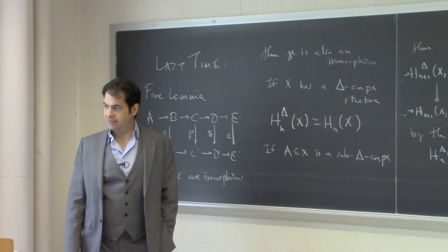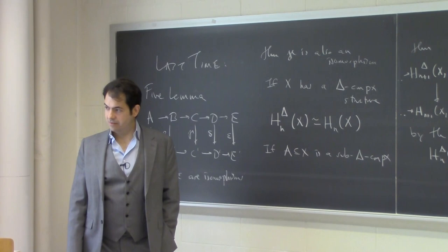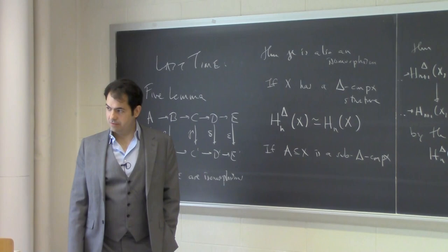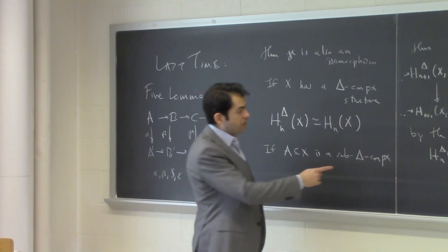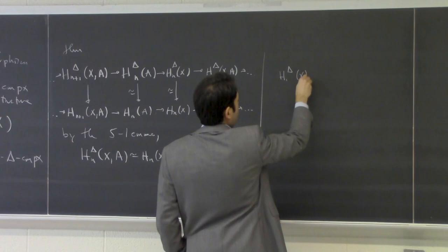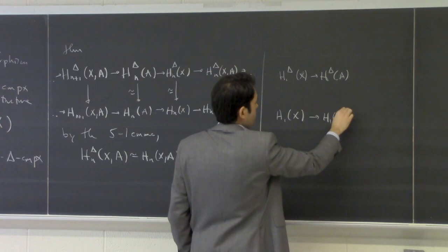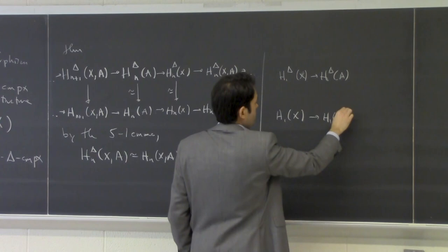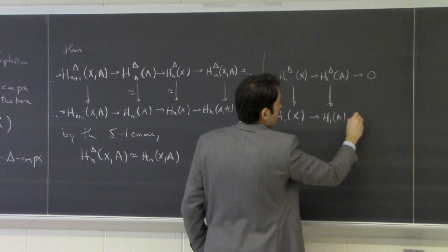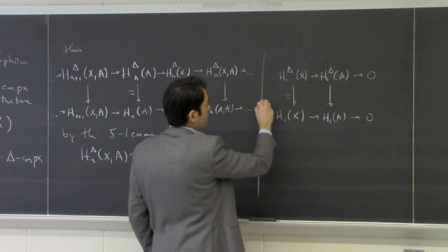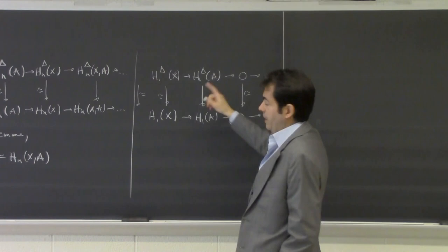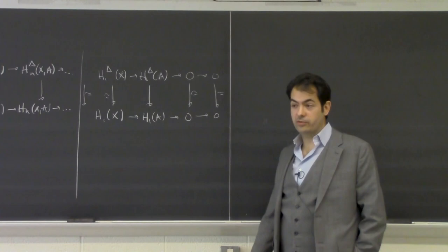A student asks what happens at the low end of the long exact sequence, near H_0, where terms go to the zero group — does the 5-Lemma still apply? Another way you can use the 5-Lemma is if you have zeros: you can put a trivial arrow between zeros and continue with zeros and put another trivial arrow. These are obviously isomorphisms, so the middle one is too.